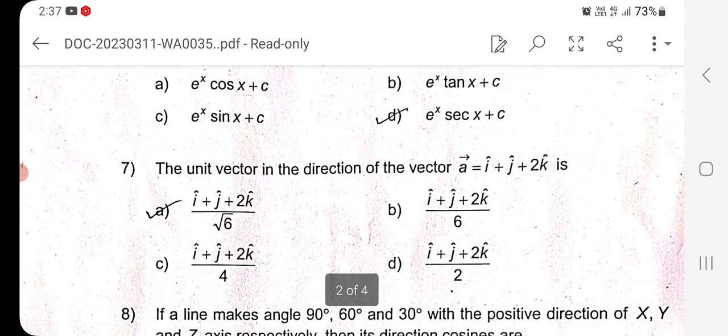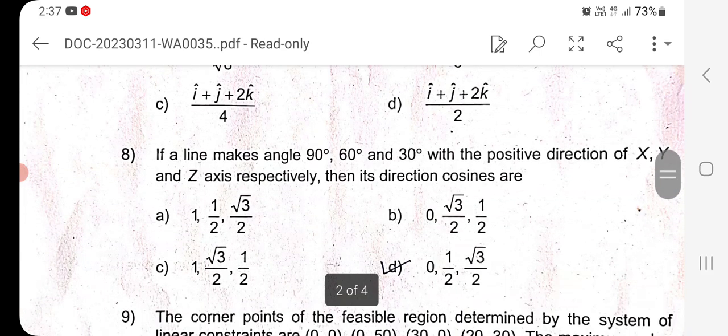Question 7: The unit vector in the direction of vector A equals i cap plus j cap plus 2 times k cap is calculated as: unit vector equals 1 divided by determinant of A times vector A. Therefore, option A is the right answer.